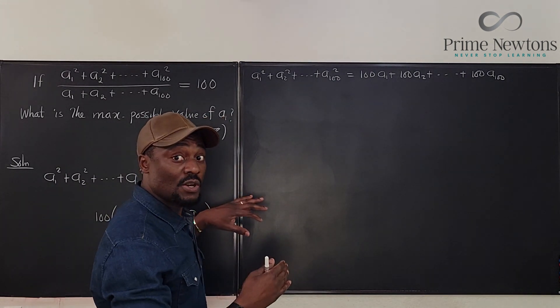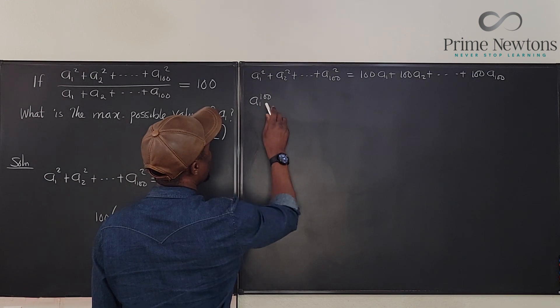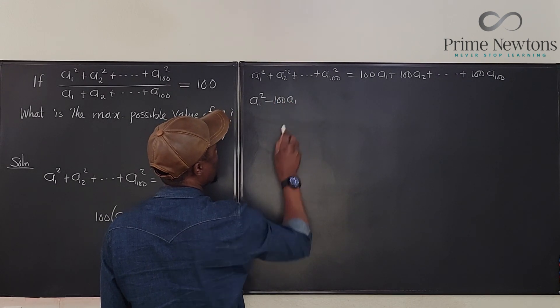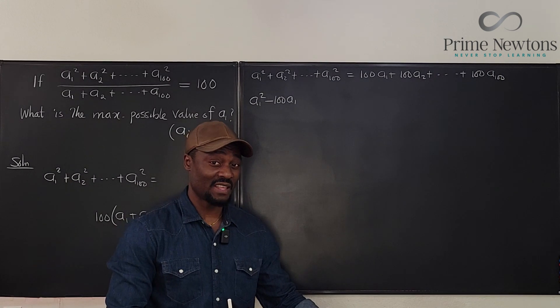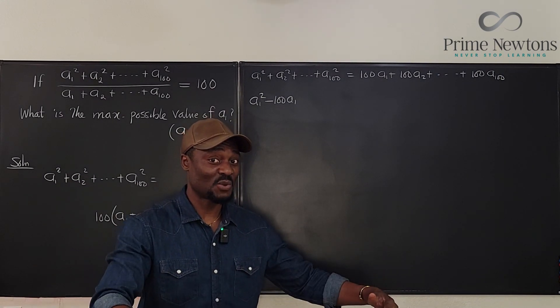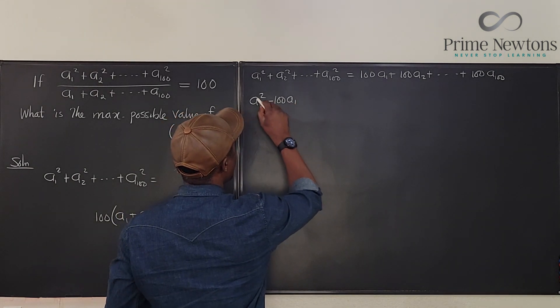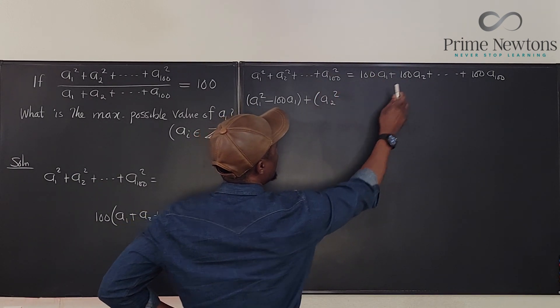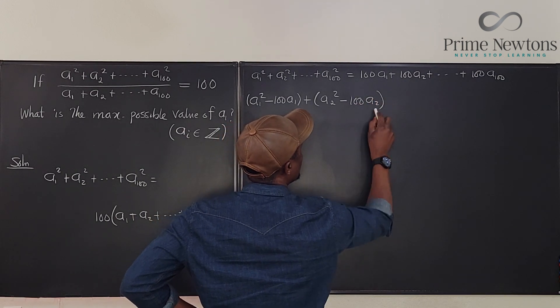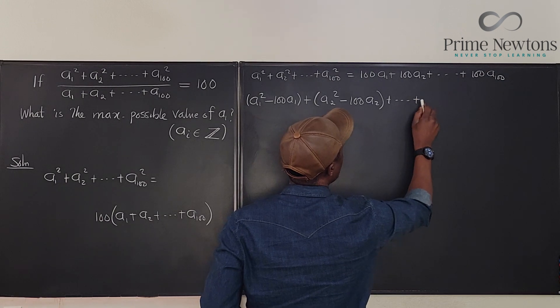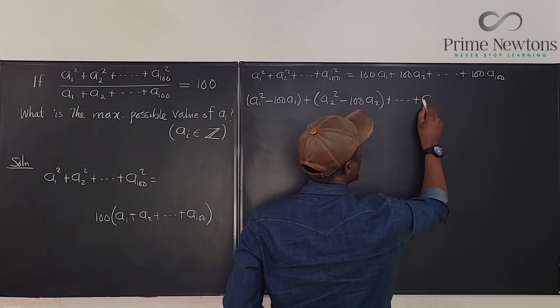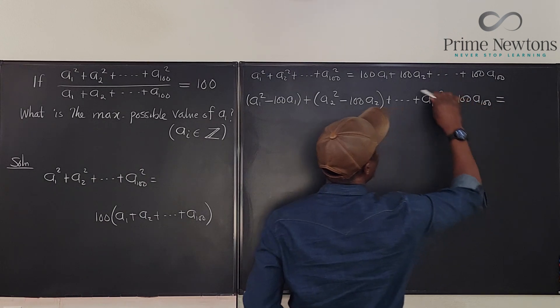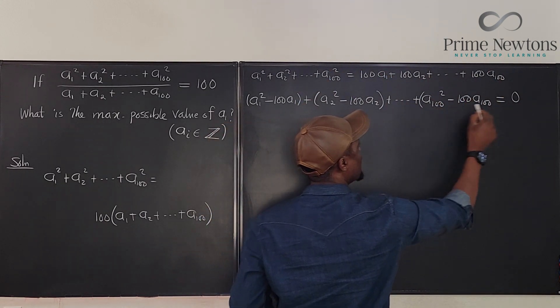Now, I'm going to collect all the terms to one side. It's going to give me A sub 1 squared minus 100 A sub 1. So what I'm going to do is every single term I'll be adding together will be positive. Plus A sub 2 squared minus 100 A sub 2. Then plus, we're going to keep going until we get to A sub 100 squared minus 100 A sub 100. And what we have left on this side is going to be zero because we've moved everything over to this side.